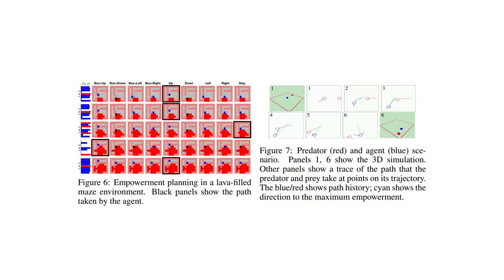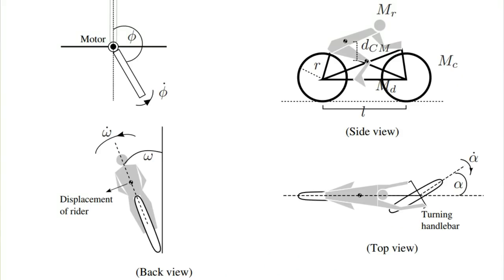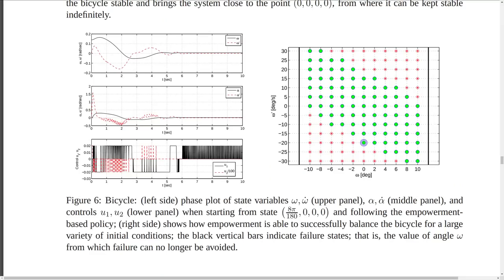People have used empowerment as a reward for experimental AI systems, and it makes them do some interesting things like picking up keys, avoiding walls, and even balancing an inverted pendulum or a bicycle. You don't have to tell it to keep the bike balanced — it just learns that if the bike falls over, the agent's actions will have less control over the environment. So it wants to keep the bike upright.